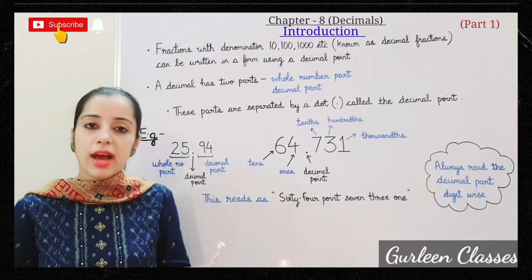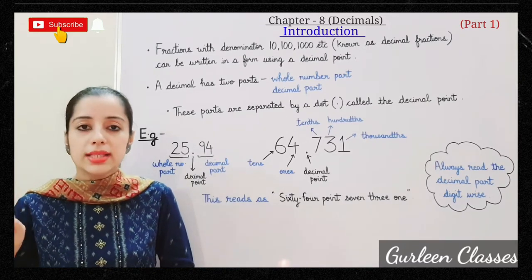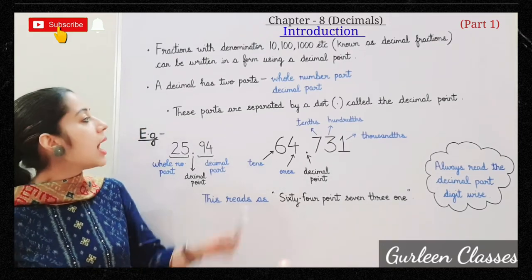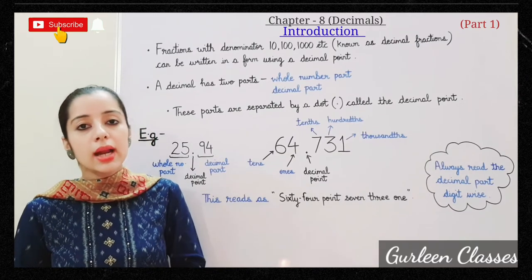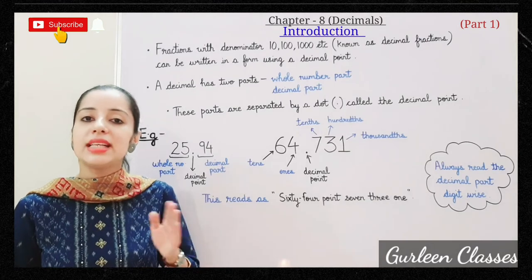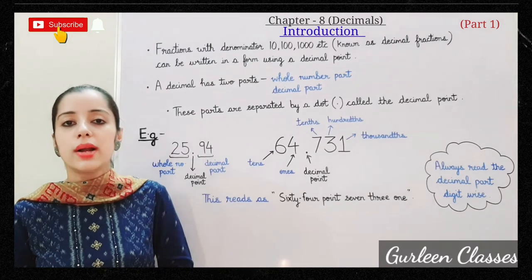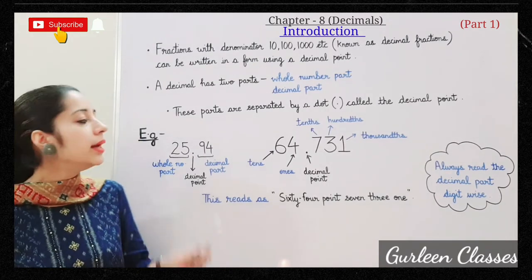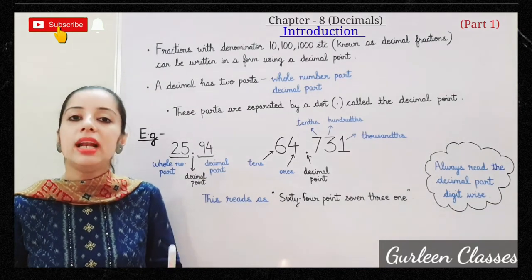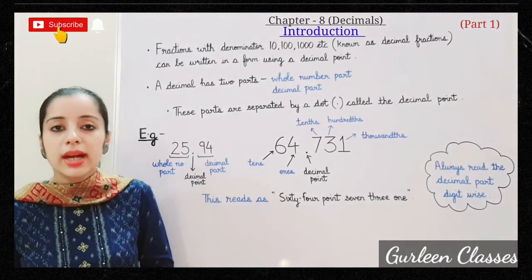We can convert fractions into decimals and decimals into fractions, which we will study further. A decimal has two parts: the whole number part and the decimal part. These parts are separated by a dot called the decimal point. For example, 25.94 — the left side of the decimal point is the whole number part, and the right side is the decimal part. So here 25 is the whole number part and 94 is the decimal part.